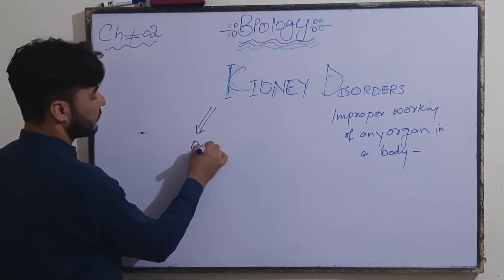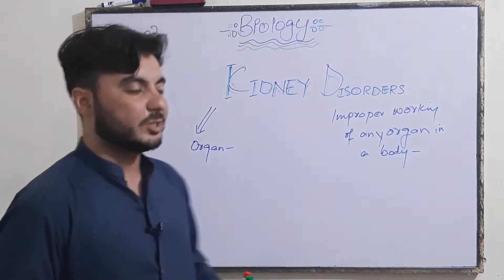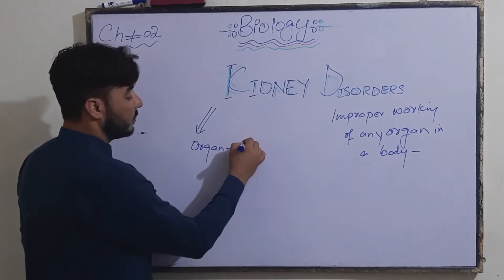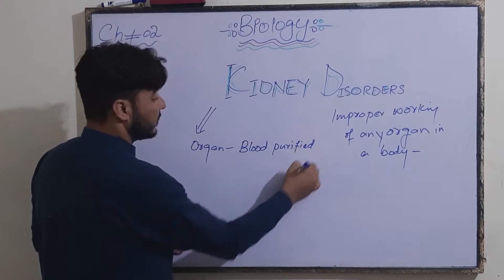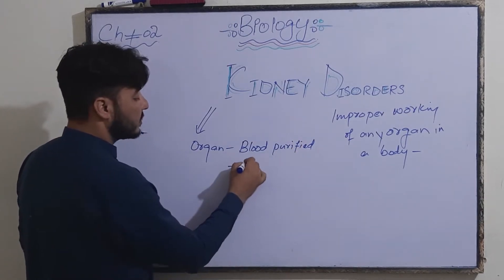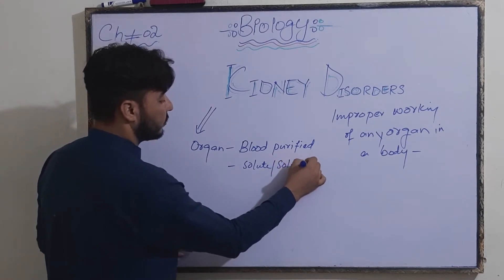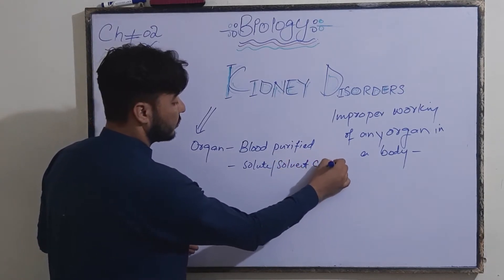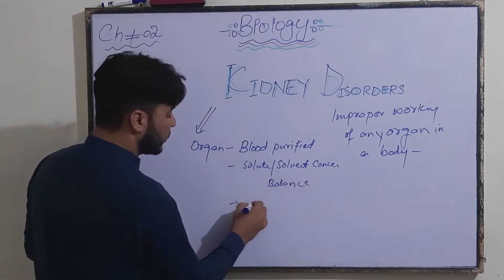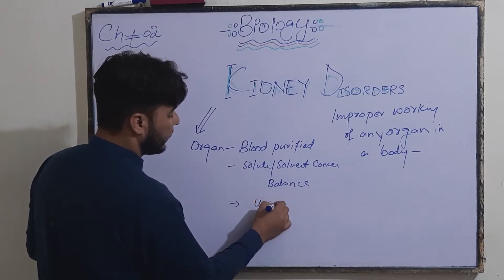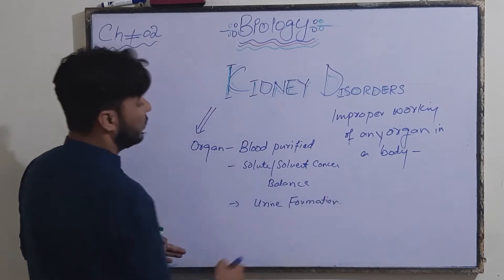The kidney is an organ responsible for blood purification and urine formation. The main working of the kidney is blood purification and filtration. This is called solutes and solvents concentration balance. The third function is urine formation — it means that urine is carried out. So this is the working of the kidney.